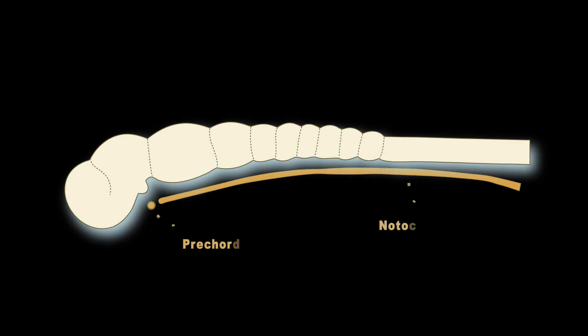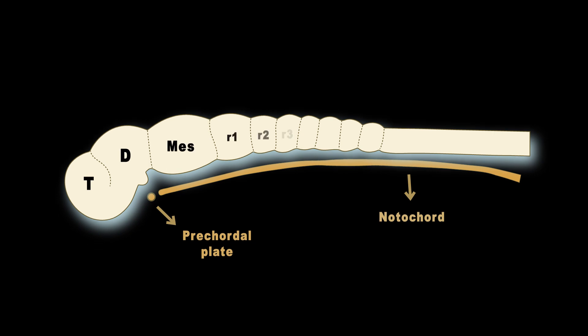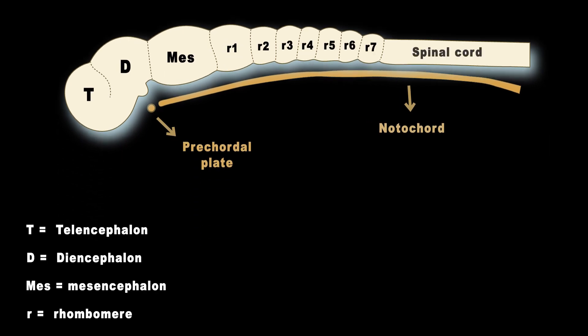Once the neural tube is formed, it undergoes a process called segmentation, which divides it into different segments: forebrain, midbrain, hindbrain, and spinal cord segments.